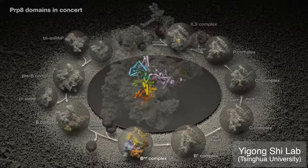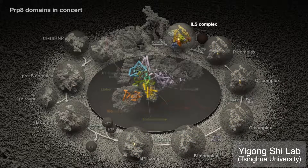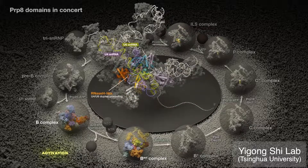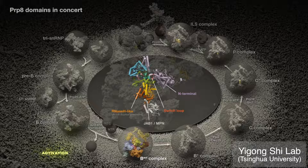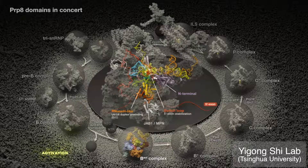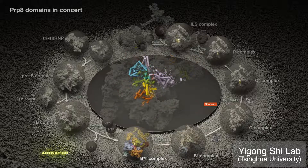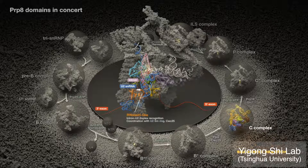A comparative morph of PRP-8 domains visualizes functional insights into this central hub and catalytic scaffold. During activation, the jab, switch loop, and other domains undergo pronounced rearrangements relative to the bulk of the N-terminal domain, reflecting unwinding of the U4-U6 duplex by BRR2 helicase, stabilization of the 5' exon, and formation of the active site. The RNA-Sage-like domain then moves to recognize the intron U2 duplex, while coordinating with proteins at the active site.